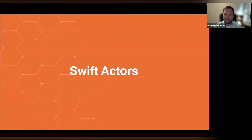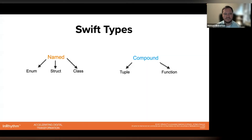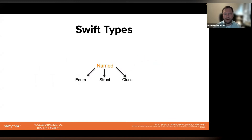With that said, let's get into this evening's topic: Swift actors. I'm going to spend the next few minutes briefly walking through what an actor is and what problem it solves for Swift developers. First, I want to provide a little bit of context. What you see in front of you is what I'll call the Swift type family tree. Historically, Swift had a handful of foundational types that can be broken out in a couple of different ways. On the right you have compound types — tuples and functions — and on the left you have named types, so called because these are things you can name when they're initially defined.